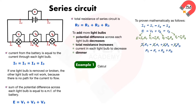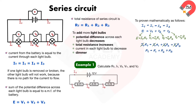Example 1: Calculate the total resistance, current from the battery, and potential difference across resistors X, Y, and Z. Calculate the total resistance using the equation R_T equals R_1 plus R_2 plus R_3. Substituting R_1 equals 6, R_2 equals 4, and R_3 equals 8, so R_T equals 18 ohms.